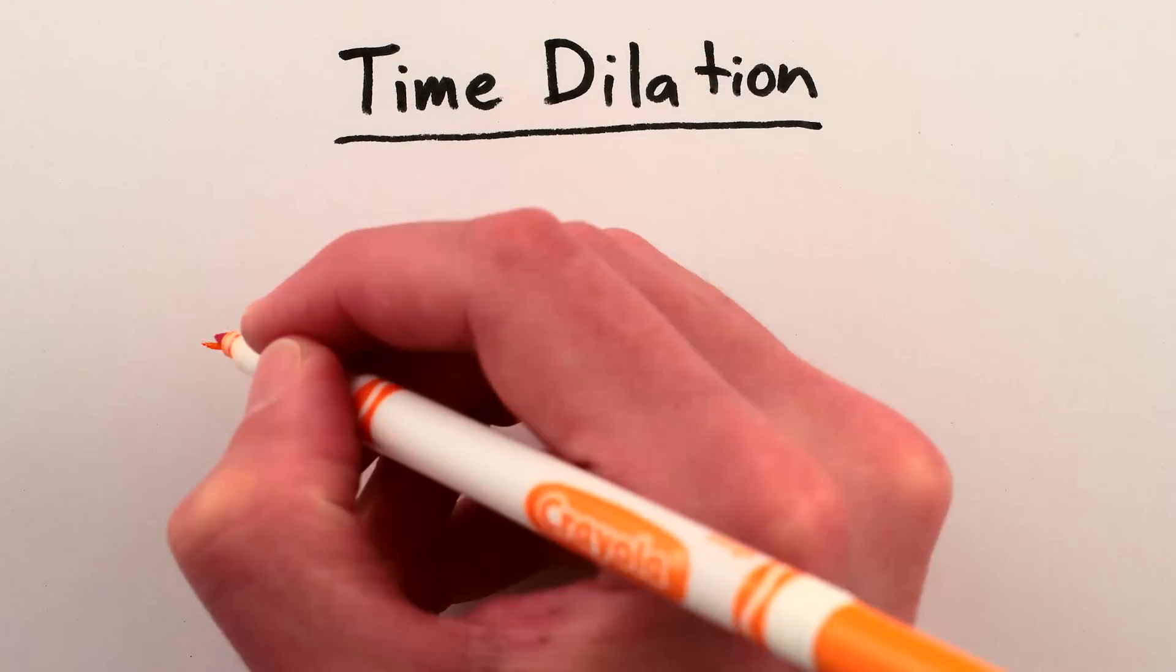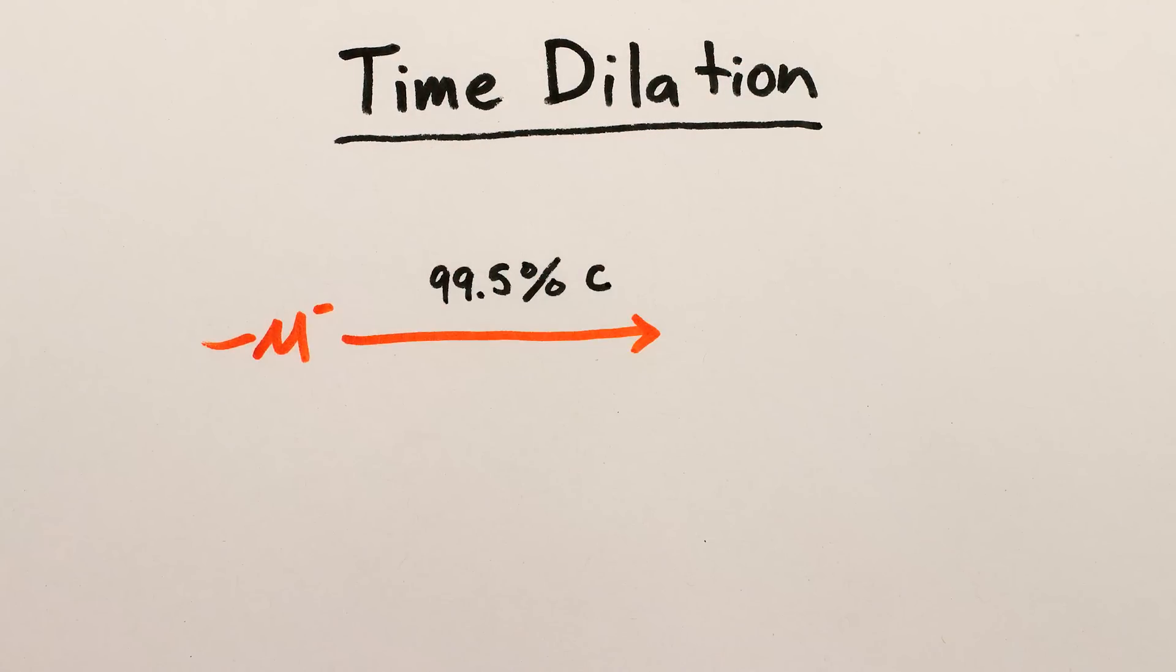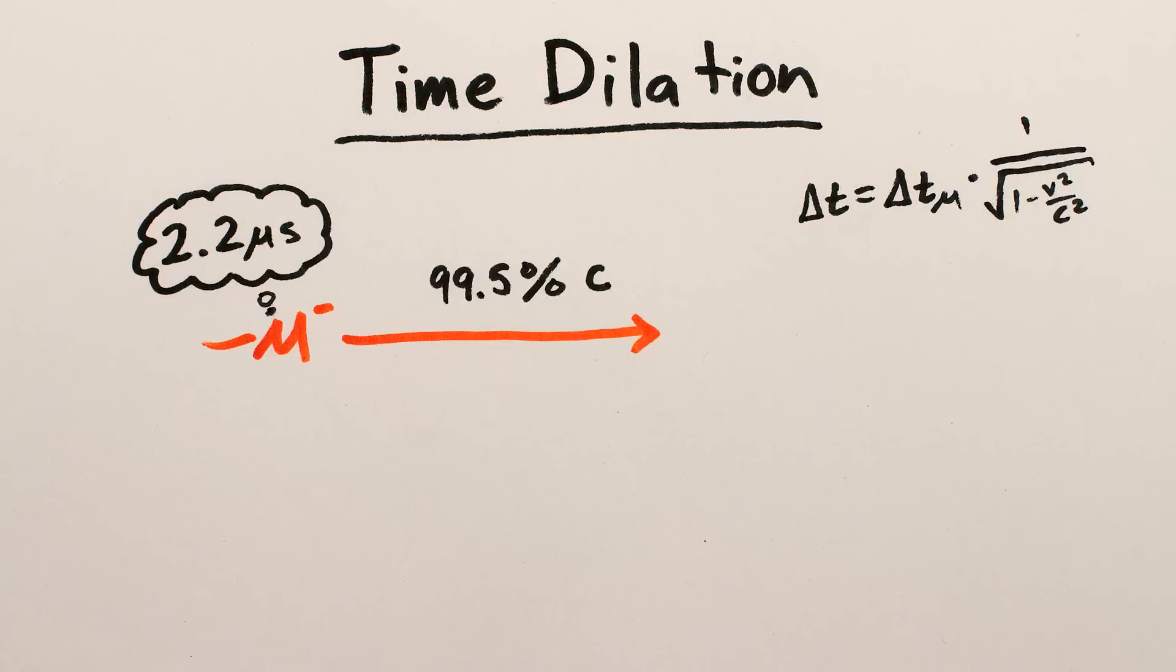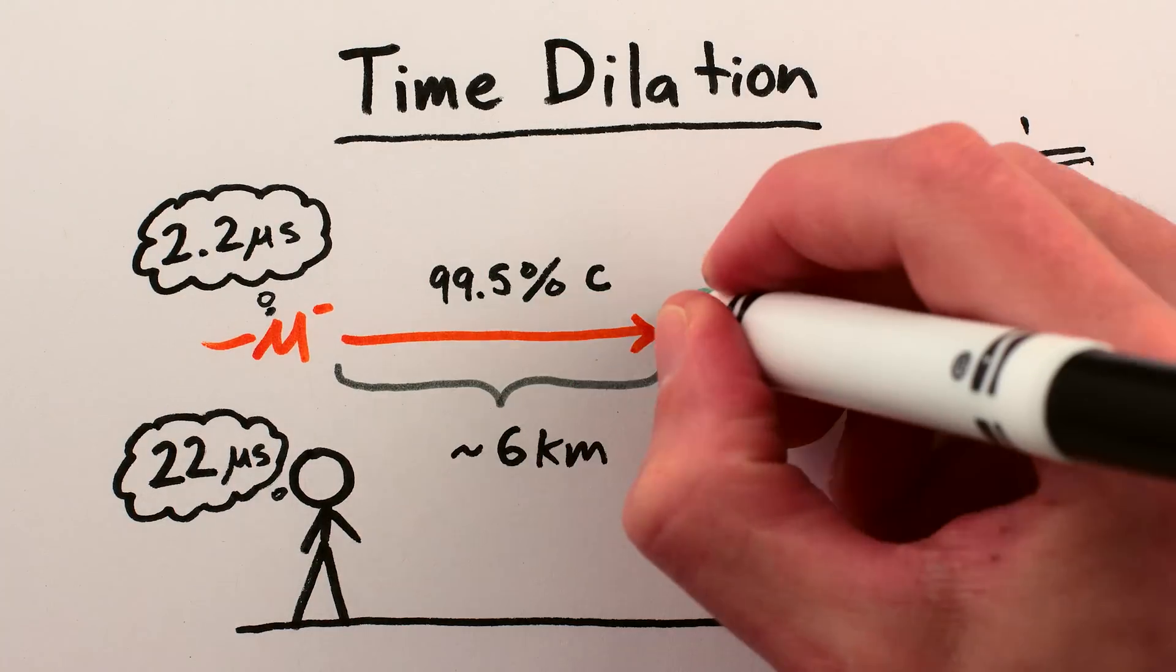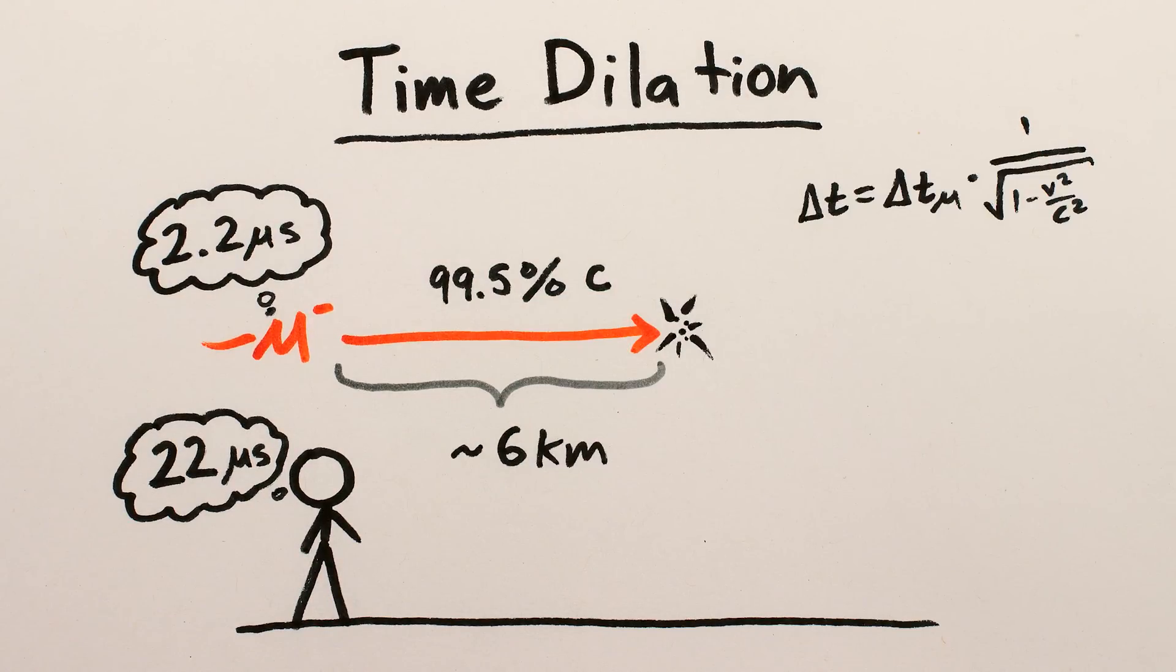Yes, because the muons are traveling close to the speed of light, their time literally passes more slowly. At a speed of 99.5% the speed of light, 2.2 microseconds for them would be about 22 microseconds for us, enough time for the average muon to travel at least 6 kilometers before decaying, instead of half a kilometer.